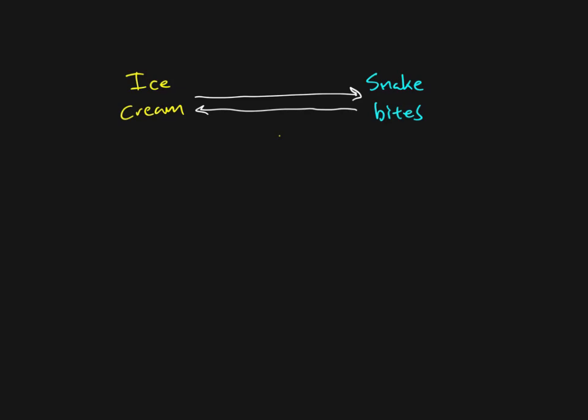But there's another possibility that is much, much better, and that is the weather — or you could say time of year. When it is hot outside, that causes people to go and buy ice cream. And when it is hot outside, it also causes people to go hiking and do outdoor activities, and that leads them to be more vulnerable, more likely to get bitten by a snake. I've picked this example because it's very obvious that going and buying ice cream is not likely to get you bitten by a snake. That is painfully obvious here.